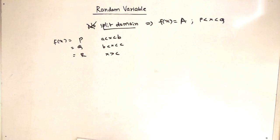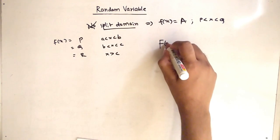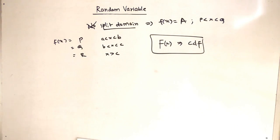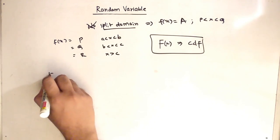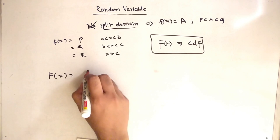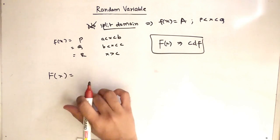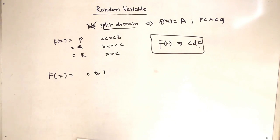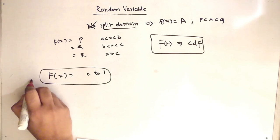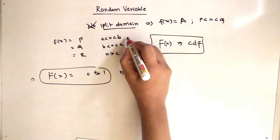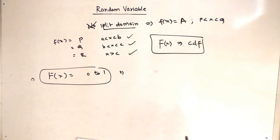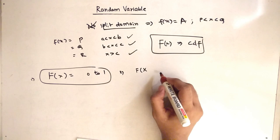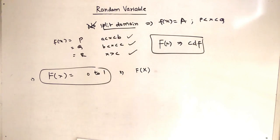The main difference here involves capital F(x), the cumulative distribution function — this term is very important when we talk about split domains. Capital F(x) ranges from 0 to 1; it cannot be greater than 1. Also, for every range, capital F(x) will be different. These two facts are fixed.